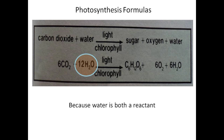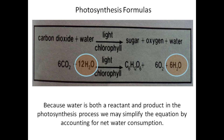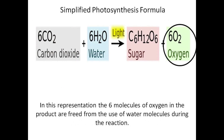Because water is both a reactant and product in the photosynthesis process, we may simplify the equation by accounting for net water consumption. In this representation, the six molecules of oxygen in the product are freed from the use of water molecules during the reaction.